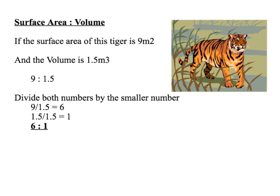Surface area to volume ratio is often used for things like comparing rates of heat loss, and you could be asked to calculate it. For example, if the surface area of a tiger is 9 metres squared and the volume is 1.5 metres cubed, the ratio is 9:1.5. To express it as something to 1, divide both numbers by the smallest: 9 divided by 1.5 is 6, and 1.5 divided by 1.5 is 1. So the ratio is 6:1.